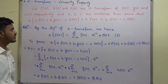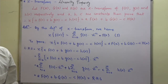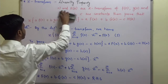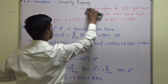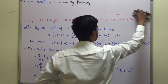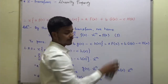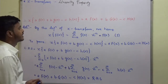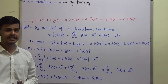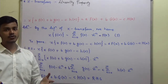Therefore, Z-transform of A times F of N plus B times G of N minus C times H of N equals A times F of Z plus B times G of Z minus C times H of Z. This proves the result. It is a very simple property and we are going to make use of this property when we solve problems.